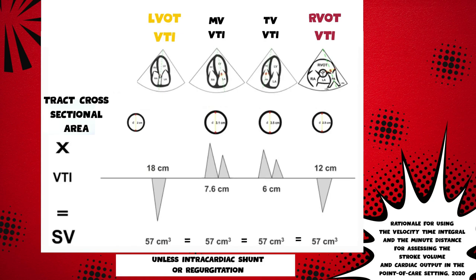This diagram shows that the RVOT VTI and LVOT VTI — the blood flow through those valves — is essentially proportional. The variation is just coming from the tract cross-sectional area, so the RVOT is a little bit larger than the LVOT. That's a little bit of a difference in the VTIs, but the stroke volume through those valves is about the same.